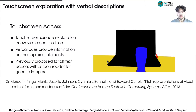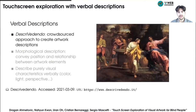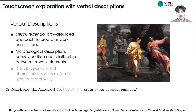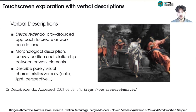A similar approach has been proposed to convey alternative text labels associated to different portions of a segmented image. In our case, however, instead of simple object labels, we propose the use of specific textual artwork descriptions derived from Descrivedendo, which is a methodology for the creation of accessible artwork descriptions through crowdsourcing. Descrivedendo descriptions are designed to convey morphological characteristics of an artwork, expliciting the artwork's structure by conveying position and relationships between artwork elements. The descriptions also narrate aesthetical and visual aspects of the artwork, such as perspective, light, and color.